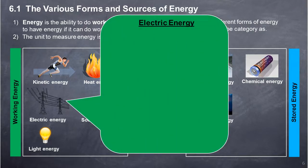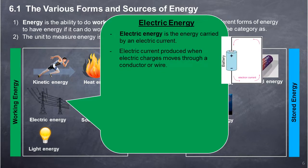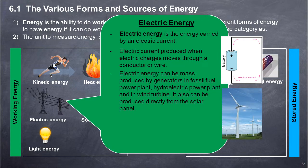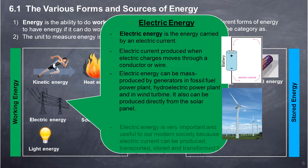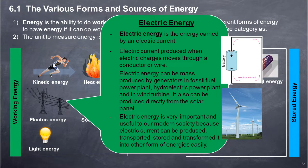Electric Energy: Electric energy is the energy carried by an electric current. Electric current is produced when electric charges move through a conductor or wire. Electric energy can be mass-produced by generators in fossil fuel power plants, hydroelectric power plants, and wind turbines. It can also be produced directly from solar panels. Electric energy is very important to modern society because it can be produced, transported, stored, and transformed into other forms of energy easily.